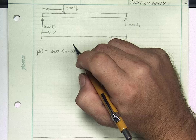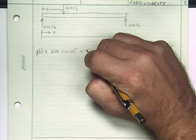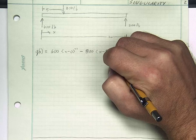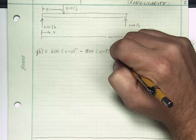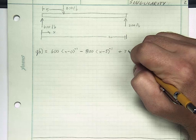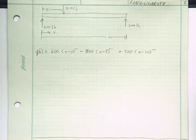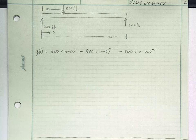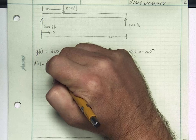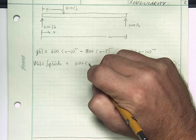So we'll say 600 times x minus 0, and a concentrated load, a concentrated force was an impulse function, so this is to the minus 1. Now I'm going to subtract 800 x minus 5, turns on at 5 inches, minus 1. Then if I go all the way down to the end, we'll have plus 200 x minus 20 raised to the minus 1.